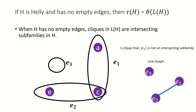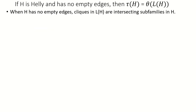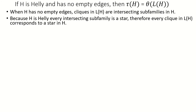Note that when we say a clique is an intersecting subfamily in the hypergraph, we really mean it's the set of edges of that intersecting subfamily. Now, because we assume our hypergraph is heli and has no empty edges, we can say that any clique in the line graph corresponds to not only an intersecting family, but a star in the hypergraph.